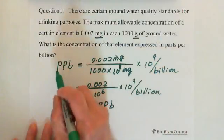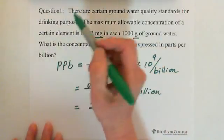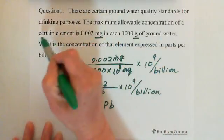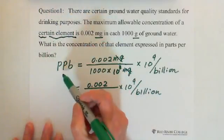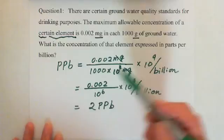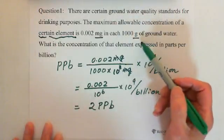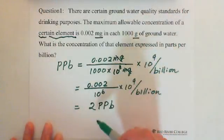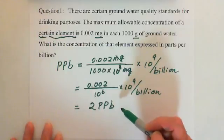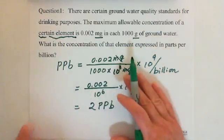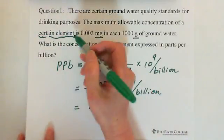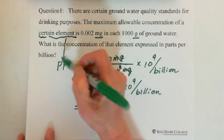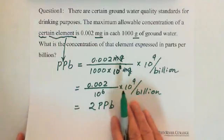So the concentration of that certain element in one thousand grams of ground water is 2 PPB. This amount is expressed as PPB. That is the answer to the first question.